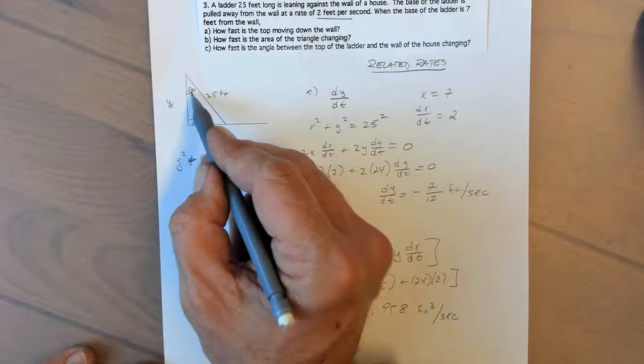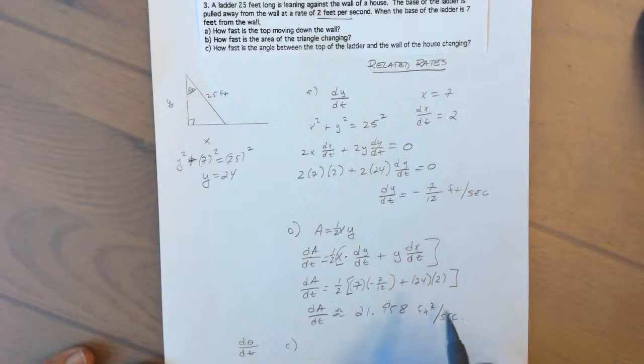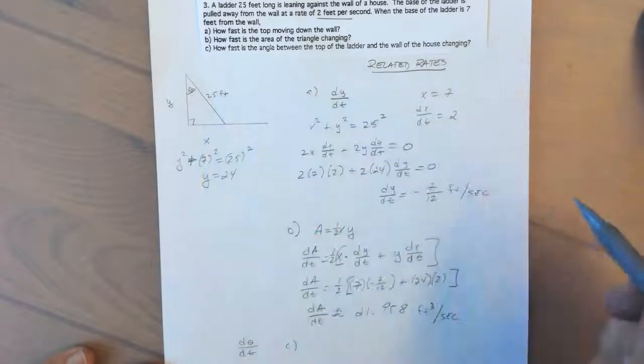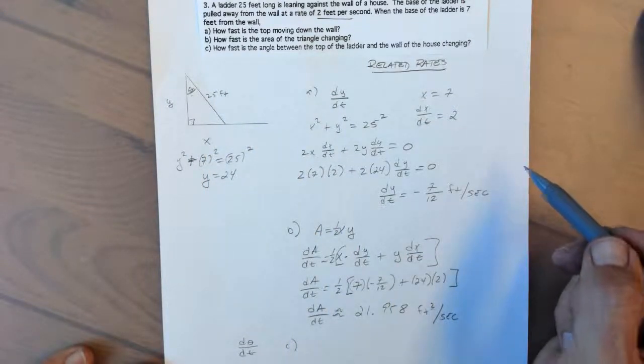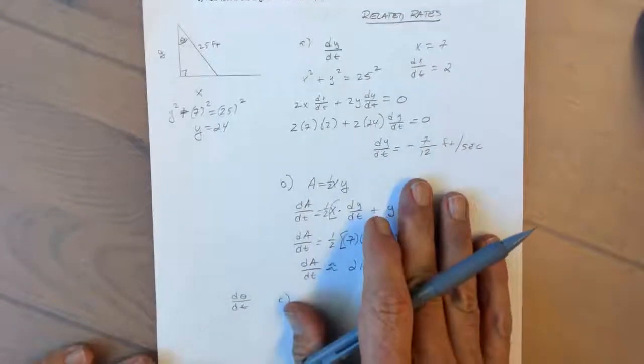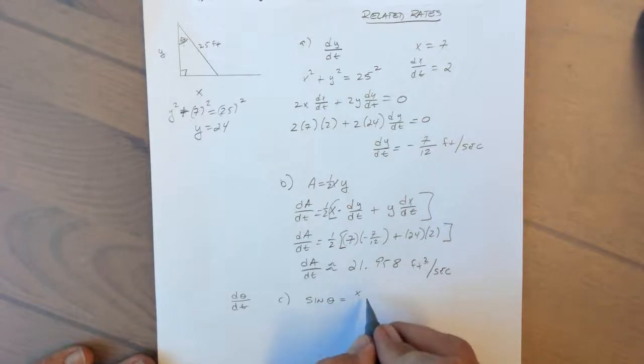So we're looking for in part C a d theta/dt. We need to figure out what's the relationship that we're going to use this angle and some of this other information we're given. I think the easiest one to use here would be the sine, because we know that the sine of theta, opposite side which is x, divided by the hypotenuse is 25.